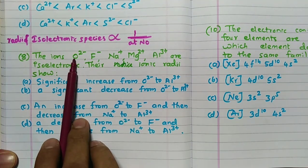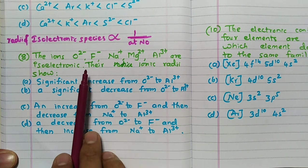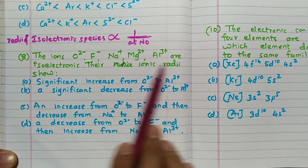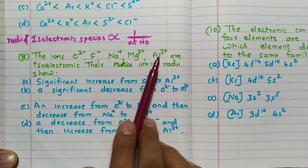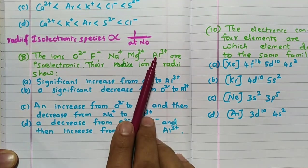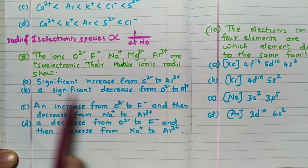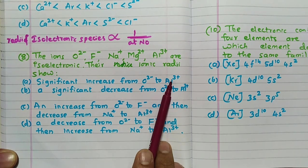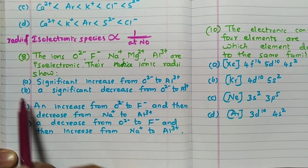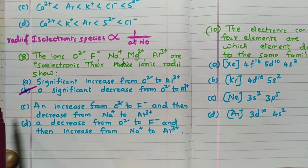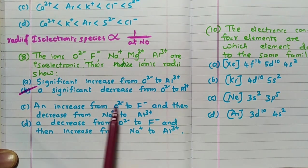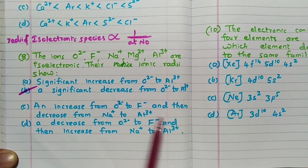Question eight: O²⁻, F⁻, Na⁺, Mg²⁺, Al³⁺ are isoelectronic species — very important. Their ionic radii: atomic numbers are 8, 9, 11, 12, 13 respectively. Since higher atomic number means smaller radius for isoelectronic species, aluminum has the least radius and oxygen has the most. So there is a significant decrease from O²⁻ to Al³⁺. 'Significant increase from O to Al' is wrong; 'increase from O to F then decrease' is wrong; 'decrease from O to F then increase' is also wrong. The answer is B.